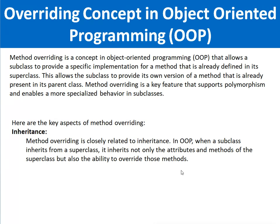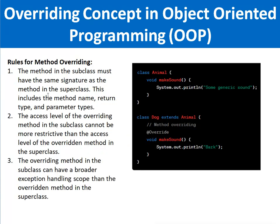First is inheritance. Method overriding is closely related to inheritance in object-oriented programming. When a subclass inherits from a superclass or base class, it inherits not only the attributes and methods of the superclass but also the ability to override those methods. Now let's discuss in detail about the rules for method overriding.